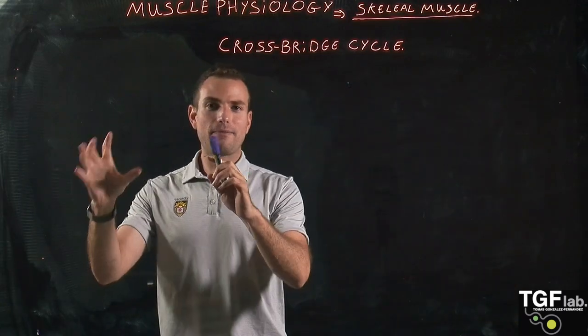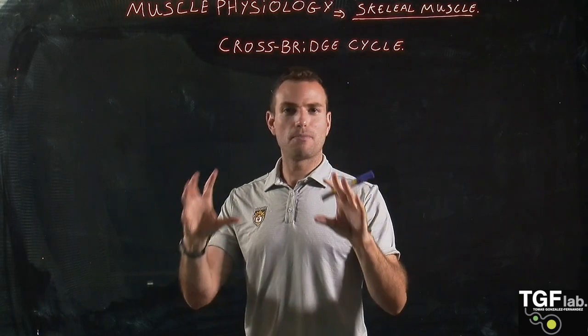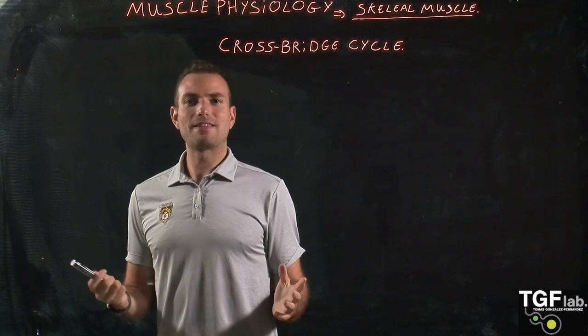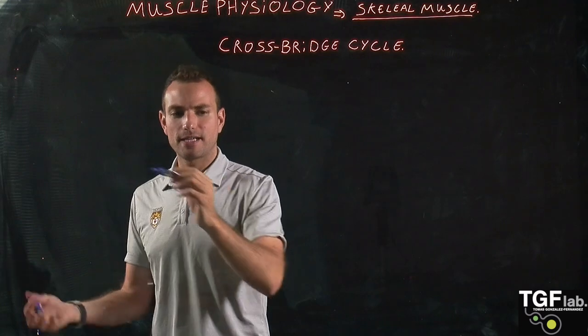Okay, so let's look a bit deeper at the sarcomere and the components of the sarcomere and how is the structure. So in the sarcomere we have the thin and the thick filaments. So let's start with the thick filaments which are the myosin.